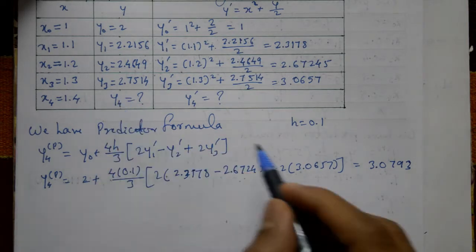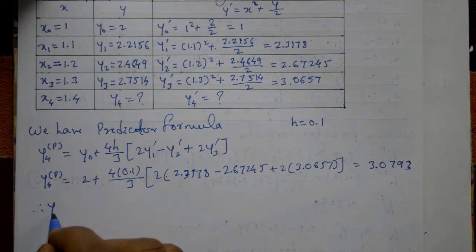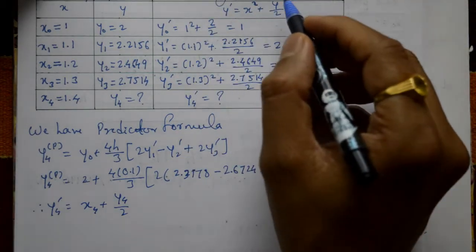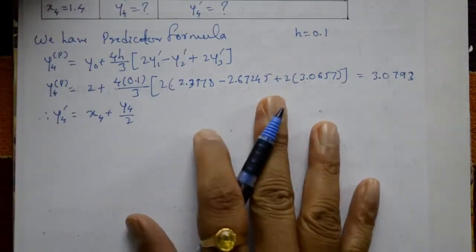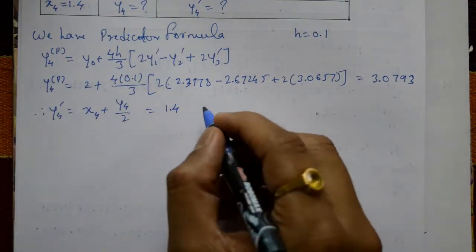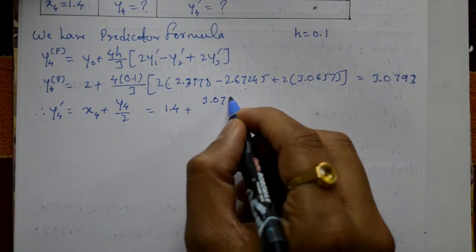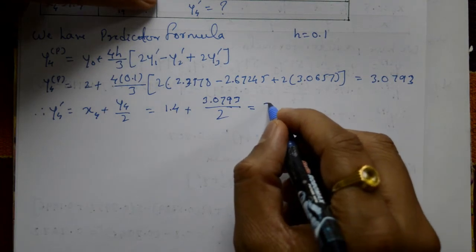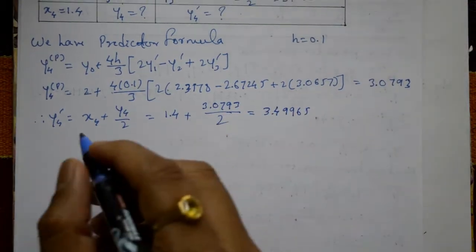From the predictor formula, y4 = 3.0793. Next, find y4' using the differential equation: y4' = x4² + y4/2 = 1.4² + 3.0793/2 = 3.49965.